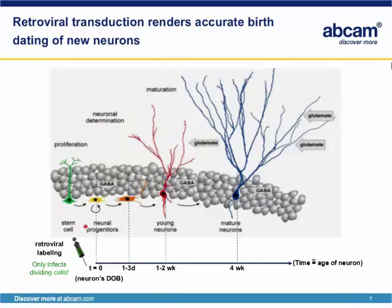One of the main advantages of the retroviral transduction method is that it provides accurate birth dating of new neurons. When the virus infects dividing progenitor cells, these cells divide for only a couple of days and then neurons are born. So if we sacrifice the animal three days, two weeks, or four weeks after retroviral infection, we know we are looking at neurons that are precisely that age.